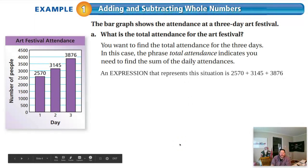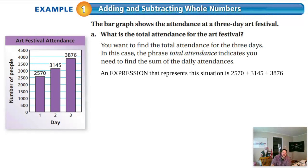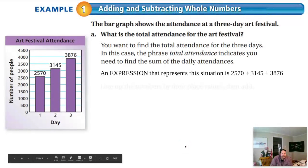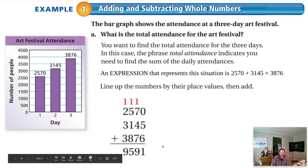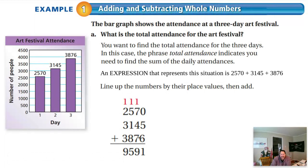An expression that represents that, you could write it as 2570 plus 3145 plus 3876. To add these up, and I'd suggest writing this down on some paper just to have in your notes. You want to line up the numbers by their place values. And when you add them, like 5 plus 6 plus 0 is 11. I put the 1 down here and I carry up the 1 here. And then 1 plus 7 plus 4 plus 7 is 19. I put the 9 down here, carry the 1 up here. Hopefully this is review.